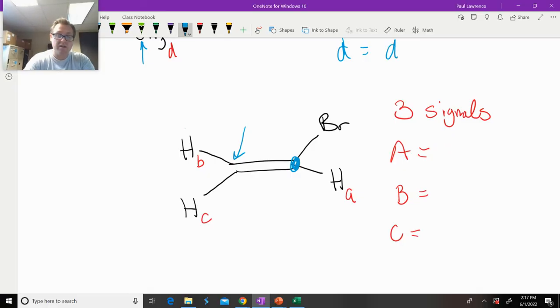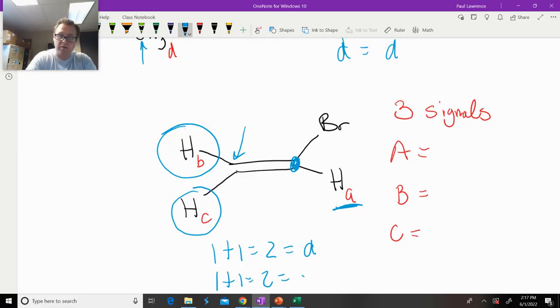The correct answer would be there's one C proton. So one plus one equals two, which is a doublet. So HA is split by HC as a doublet. But HA is also split by HB. And there's only one of them. So one plus one equals two equals a doublet. So HA actually gets split as a doublet of a doublet, or you can just go DD, or go like that, doublet of a doublet.